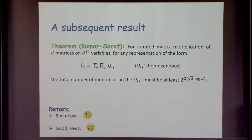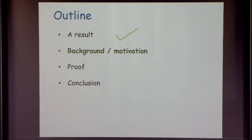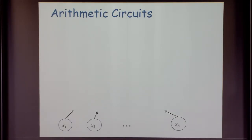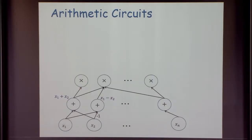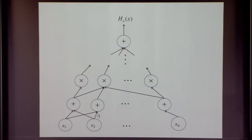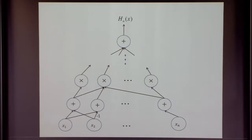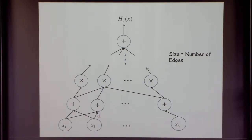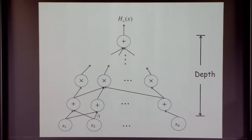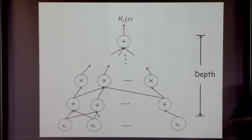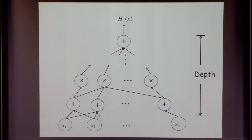Why do we need the q_ij's to be homogeneous? Once you have a product of homogeneous polynomials, it is again homogeneous, and any homogeneous summand of degree more than d can be thrown away since it never contributes to a degree-d polynomial. If you allow non-homogeneous polynomials there could be lots of cancellations. Let me recall what arithmetic circuits are. We have addition and multiplication gates; addition gates compute arbitrary linear combinations of inputs. The size of a circuit is the number of edges in the graph.